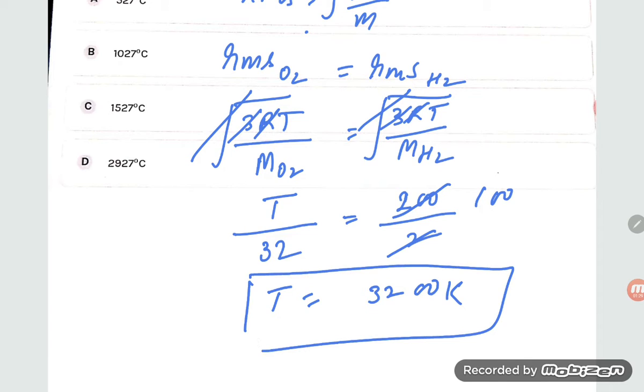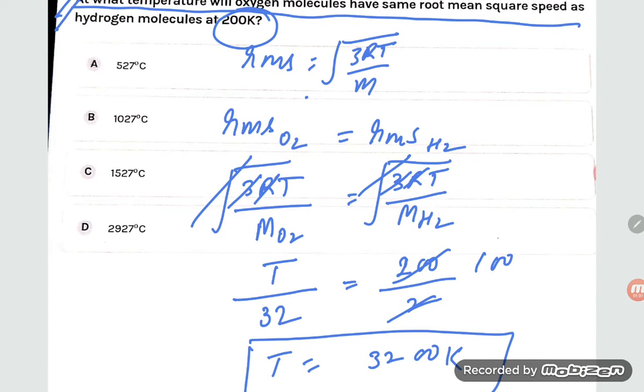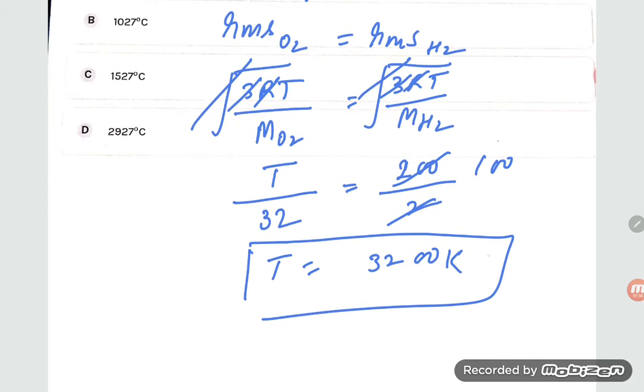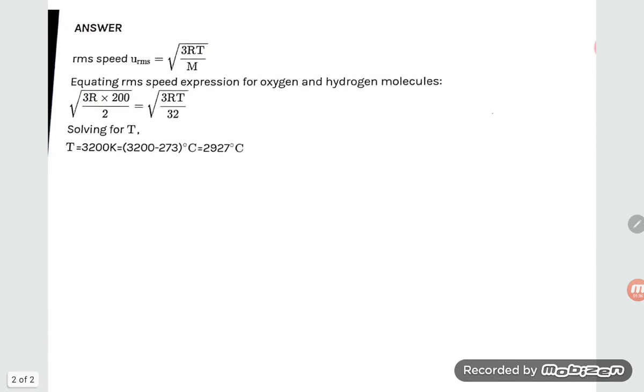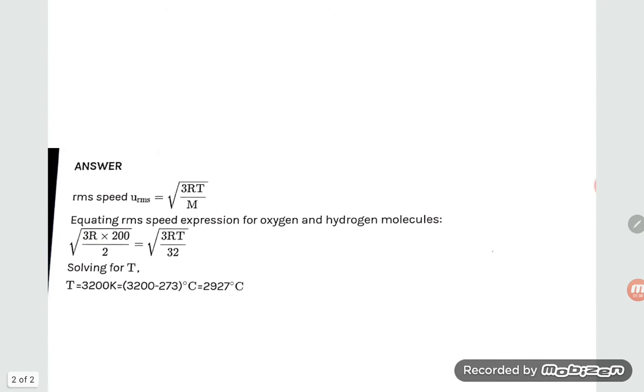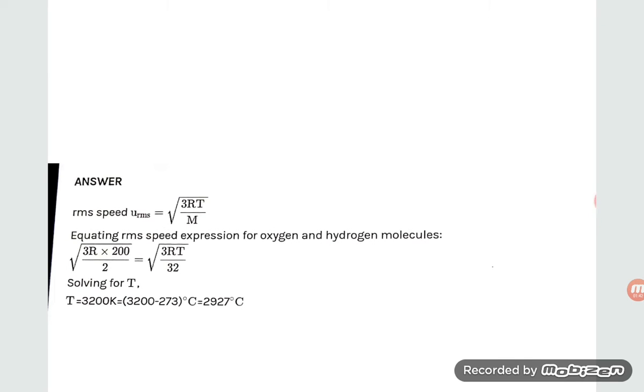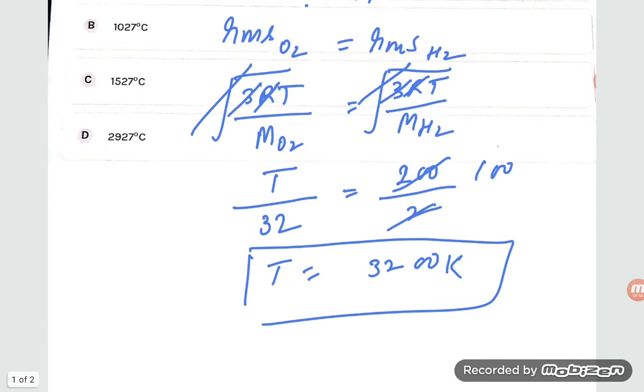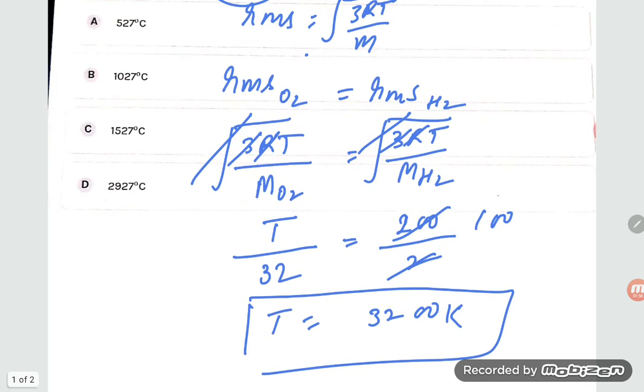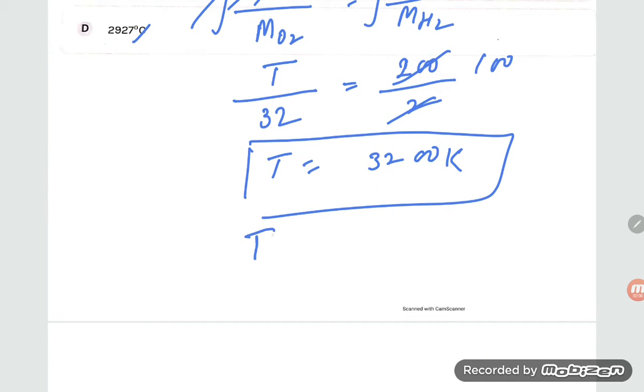So let us check out any option which we can match. 32 is okay, but here the values are given in degree Celsius, so T in Kelvin if you want degree Celsius.